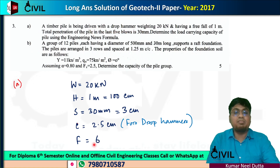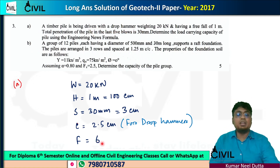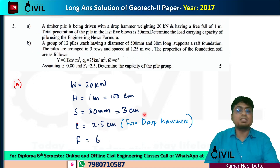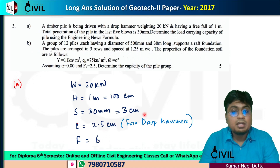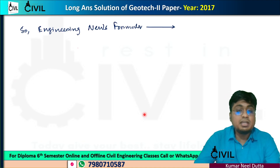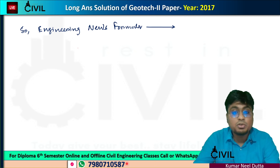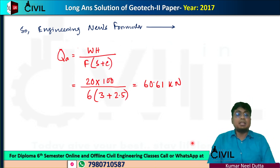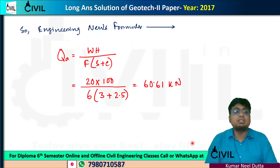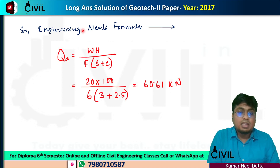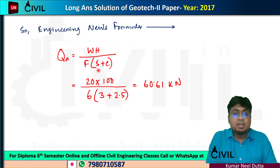Next is F, the factor of safety. The Engineering News Formula is: QA (allowable load) = WH divided by F times (S plus C). F is the factor of safety, S is the penetration, and C is the constant.